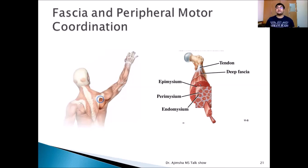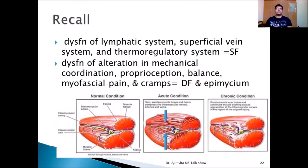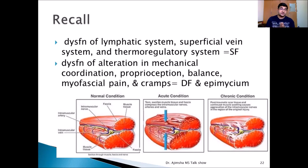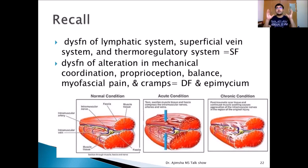If the epimysial fascia is densified or thickened, some parts of the muscle will not function normally during movement, causing unbalanced joint movement and eventually joint pain. The epimysial fascia can therefore be considered a key element in peripheral motor coordination. To recap: symptoms related to lymphatic, venous, or regulatory systems are more related to disorders of the superficial fascia, while alterations in mechanical coordination, proprioception, balance, myofascial pain, and cramps are more related to the deep fascia and epimysium.